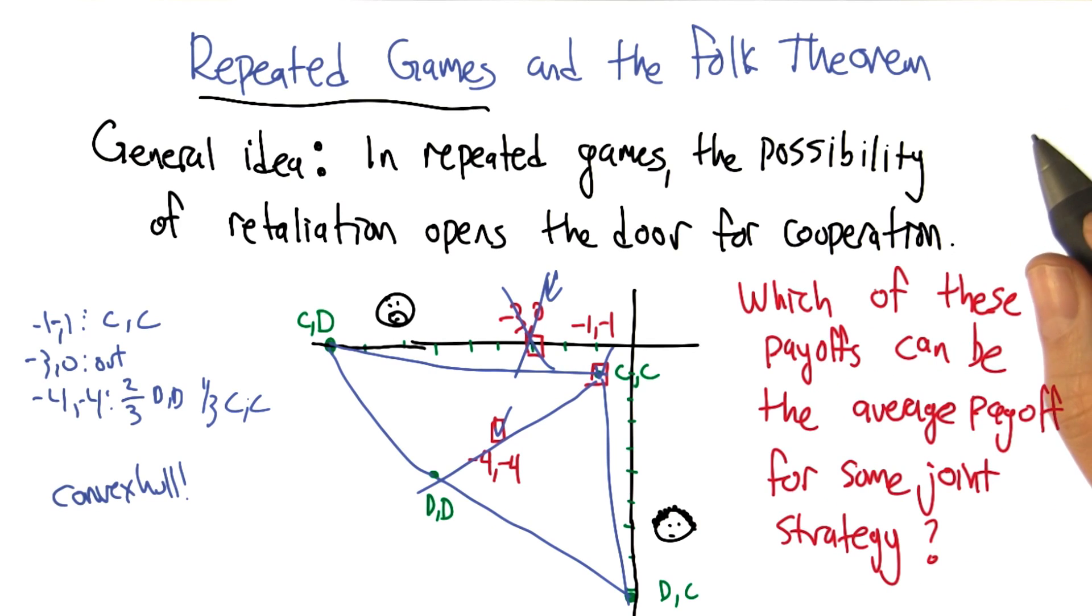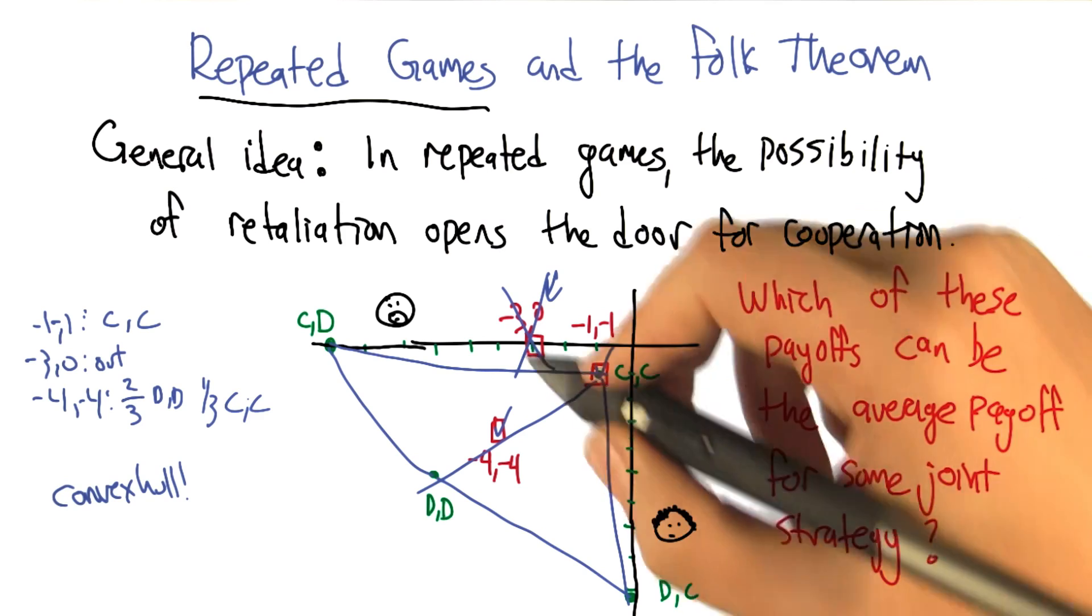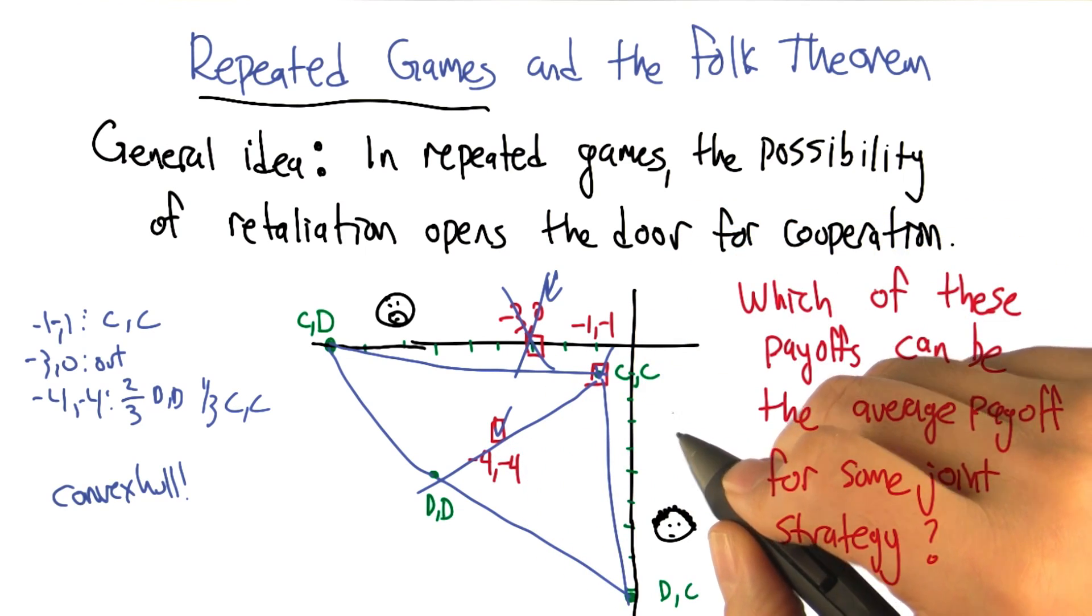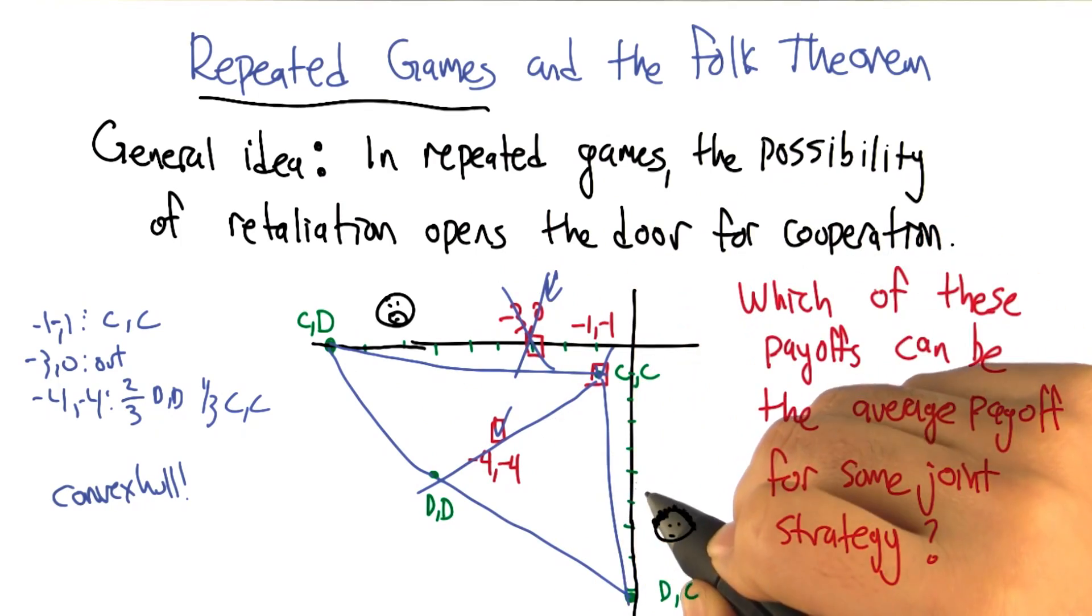Cool. All right. So you good with that? I'm good with that. If you're good with that, it's your quiz. No, I'm excited. Oh good. Yeah, so the minus one, minus one, and the minus four, minus four are doing it. And as you pointed out, there's a more general result here having to do with the convex hull.